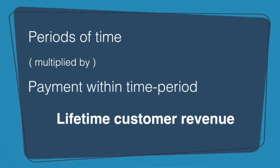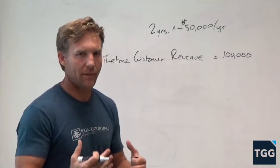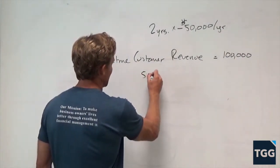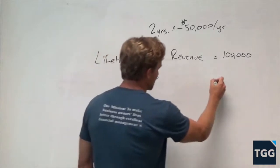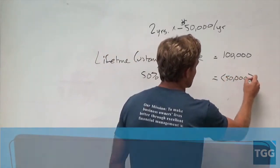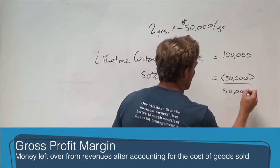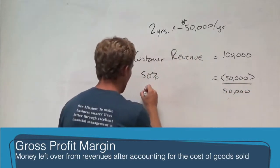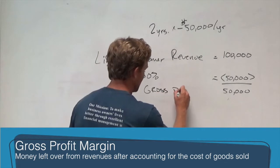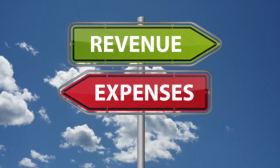That is great. Now you think about what is my gross profit margin on that particular client. In this case we're going to say it's 50%, which equals $50,000 of costs, giving us $50,000 of gross profit. Lifetime gross profit: $50,000.